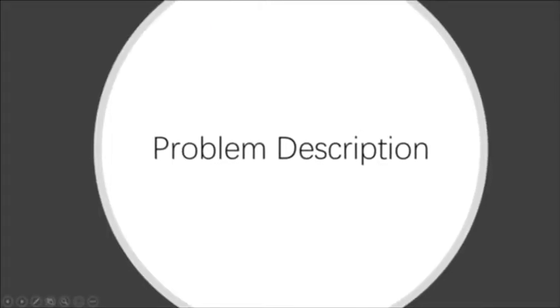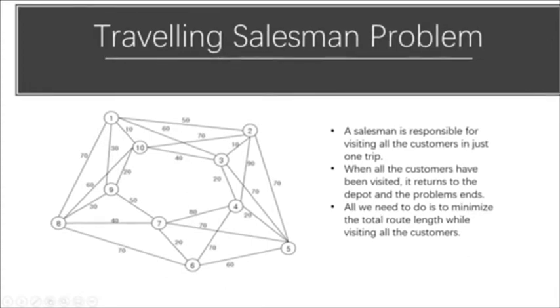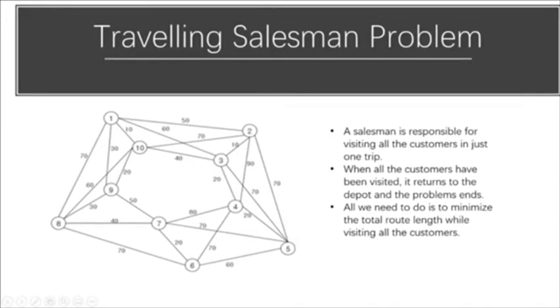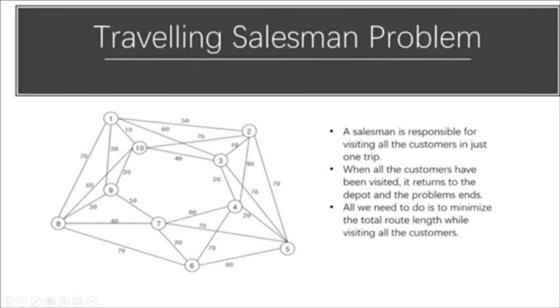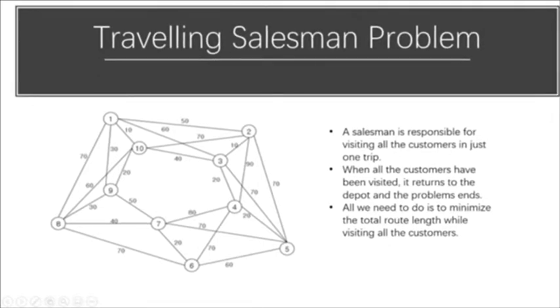The traveling salesman problem describes a salesman who must travel between several customers. The order in which he does so is something he does not care about, as long as he visits all customers during his trip and finishes where he was at first.